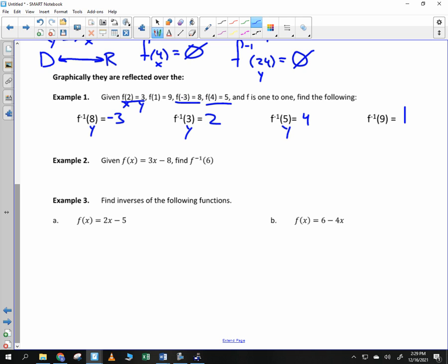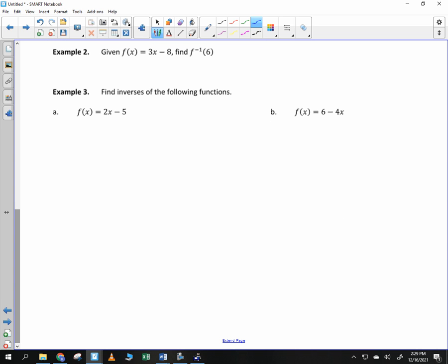Okay. It says, given f(x) = 3x - 8, find f inverse of six. Suppose instead of saying f inverse of six, suppose I said find f of six. What would you do with that six? You plug it in for x, right? But this doesn't say f of six. This is f inverse of six. What that means is that this is the Y value. So I don't plug in for x. I plug it in there. So I get 6 = 3x - 8.